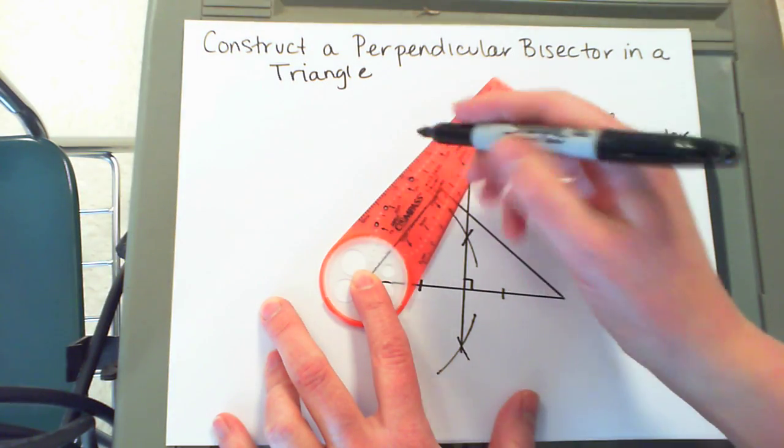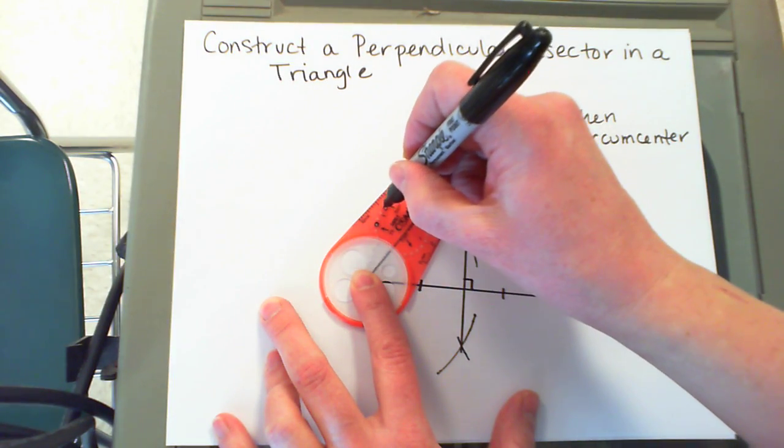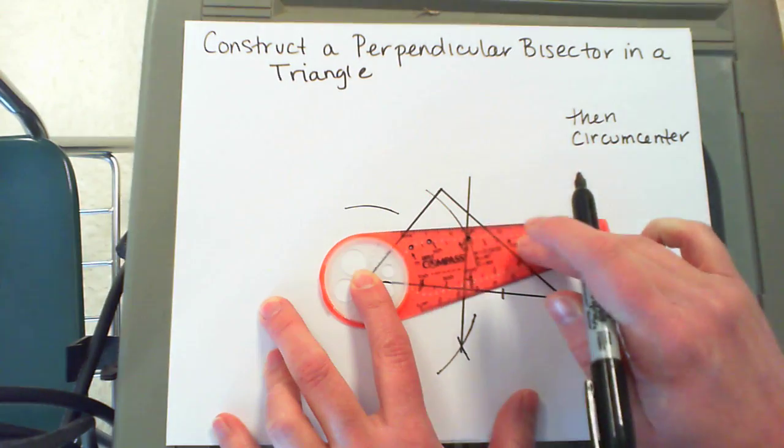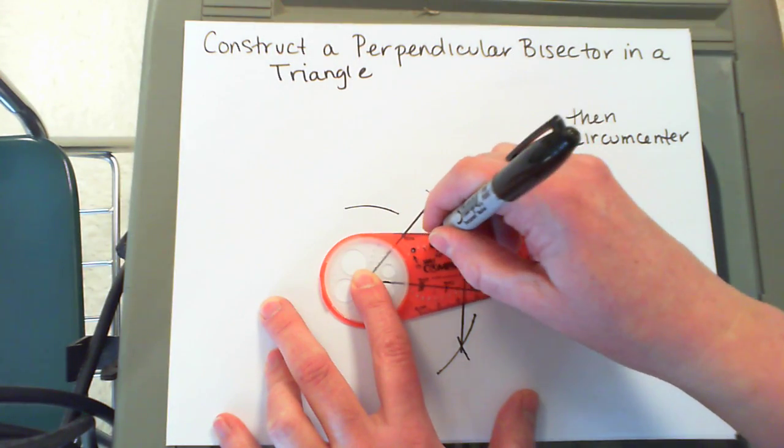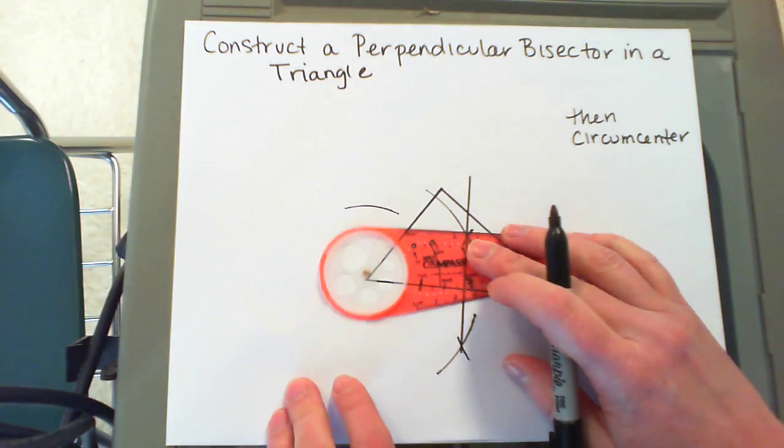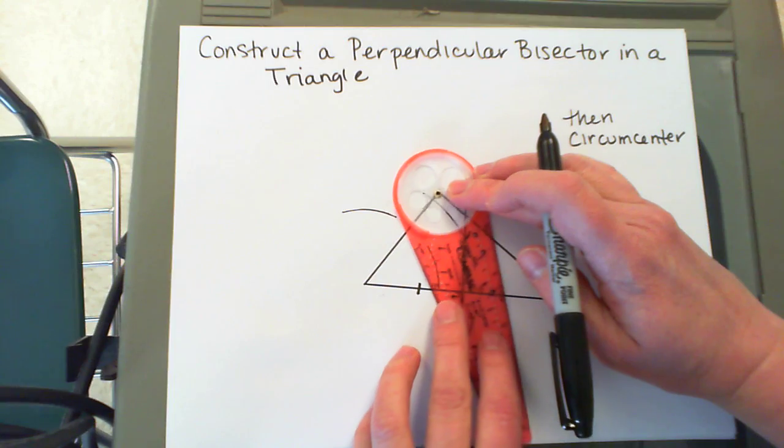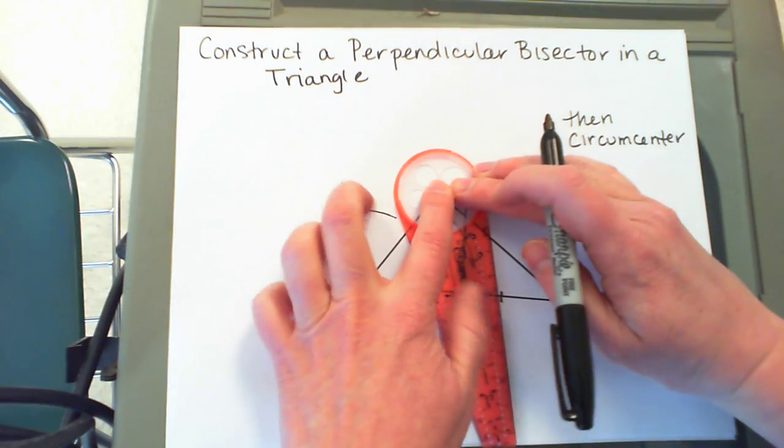I'm going to make an arc above and below that side of the triangle. Then I move my compass to the other endpoint of that side, making sure to use the same setting.